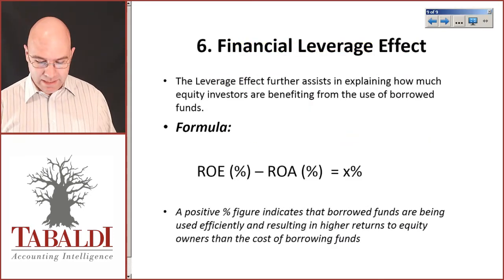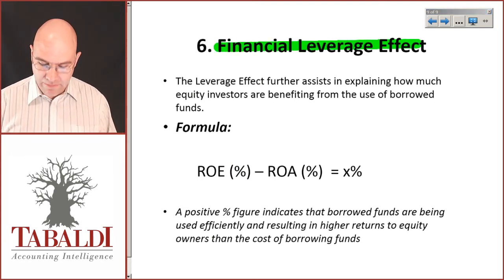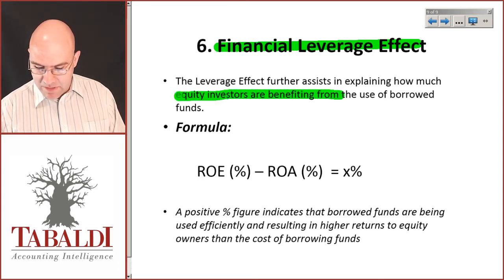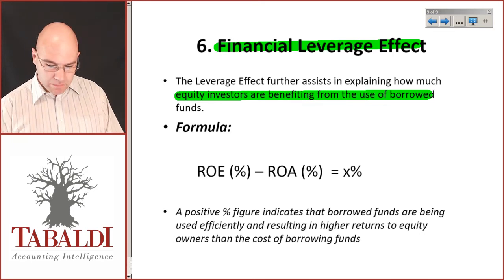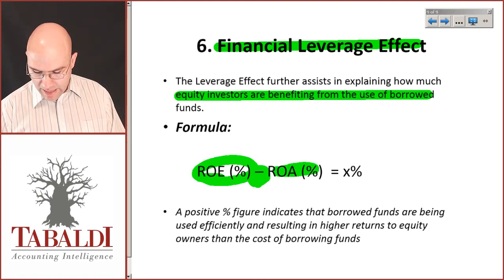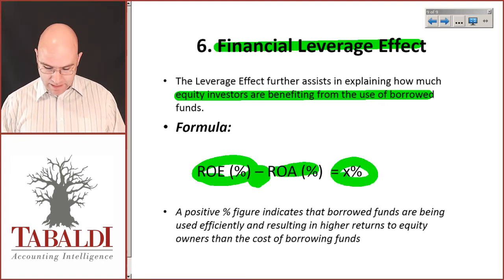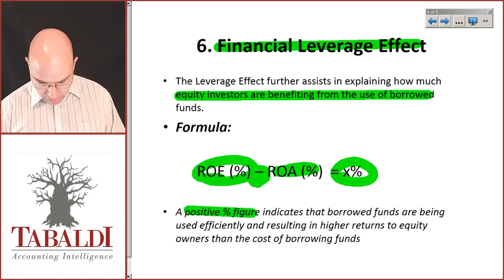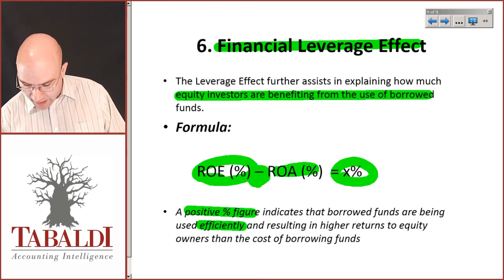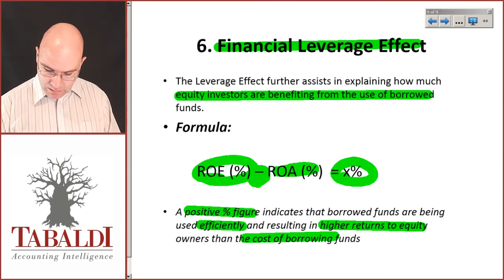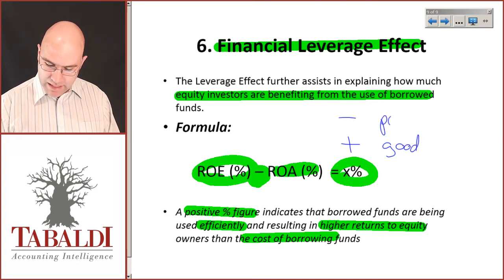A very similar measurement is the financial leverage effect. This explains further how much equity investors are benefiting from the use of borrowed funds. The formula is return on equity percentage minus return on assets, giving a percentage. A positive figure indicates borrowed funds are being used efficiently and resulting in higher returns to equity owners than the cost of borrowing. A negative figure indicates a problem.